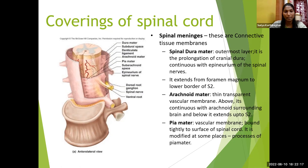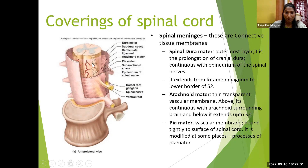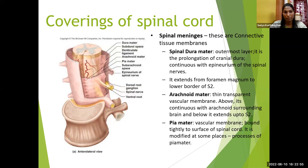The arachnoid mater is a thin transparent avascular membrane, continuous above with the arachnoid of the brain, and extending down to the S2 level. The pia mater is a vascular membrane bound tightly to the spinal cord. The spinal cord ends at L1, but spinal meninges extend to S2. So from inner to outer: pia mater, arachnoid mater, dura mater.